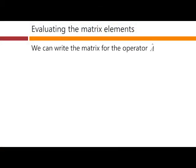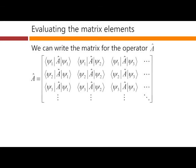So then, we can write the matrix for the operator A as this expression here, where we've written out explicitly, in terms of the basis functions, and this object, ⟨ψ1|A|ψ1⟩, for example, or some other one down here, ⟨ψ3|A|ψ2⟩.